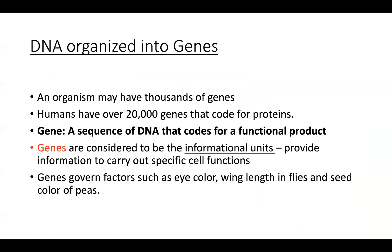Our genetic information that determines our being is basically due to genes. Any organism may have thousands of different genes. These genes are responsible for coding for proteins, and proteins are therefore the functional units of ourselves. In humans, there are over 20,000 genes that code for protein. It is these proteins that are responsible for cells getting their jobs — their functionality.